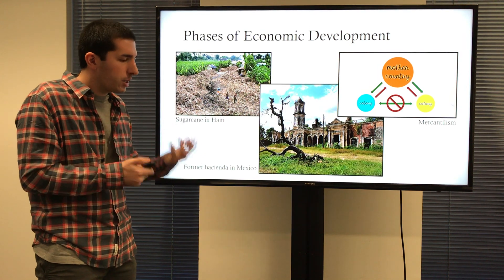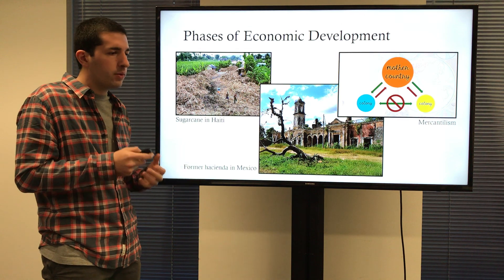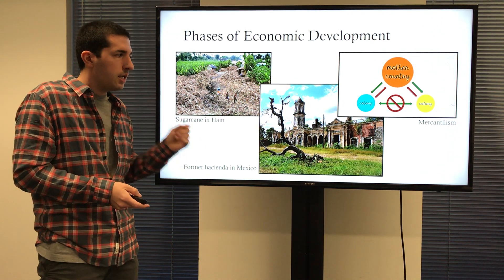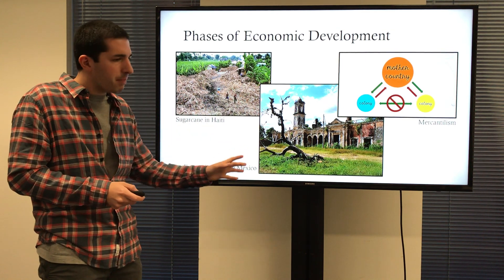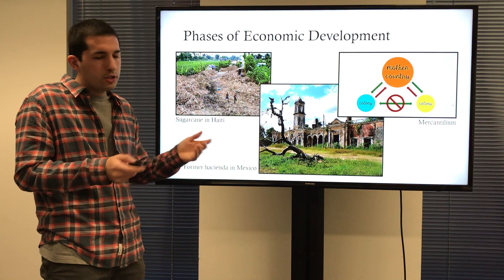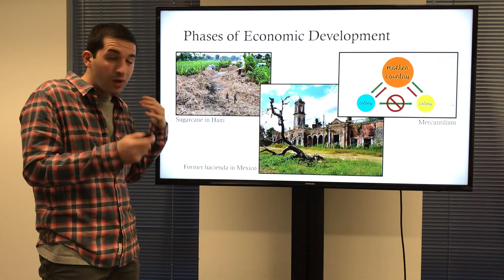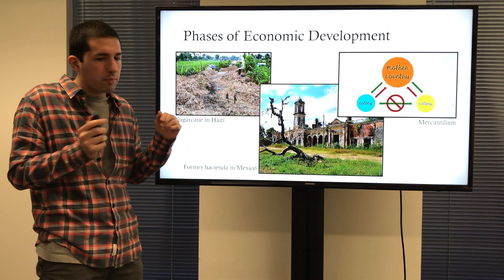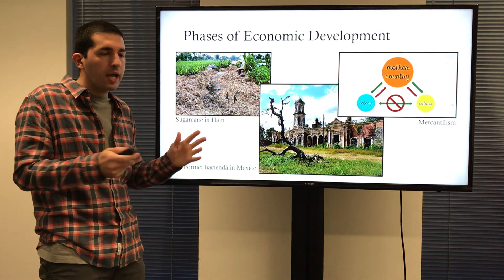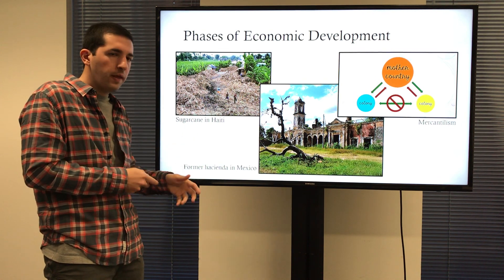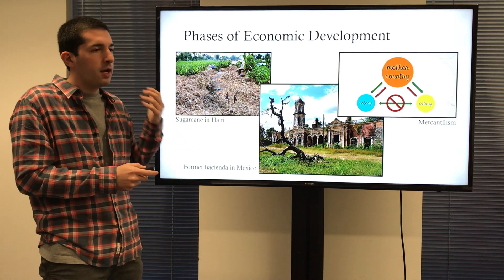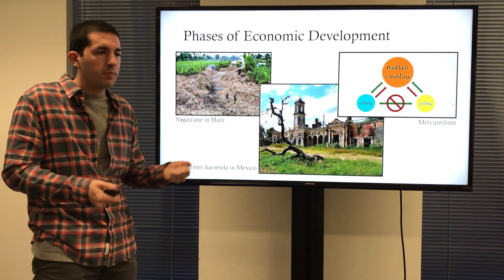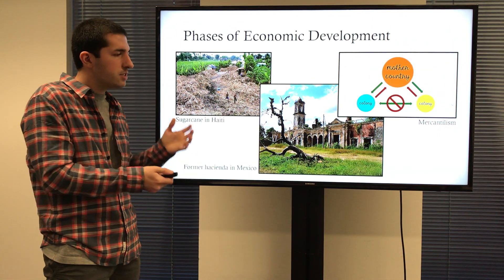From that extractive phase — that early economic phase — when we think of extractive, we're harvesting raw materials from the earth, the idea of an agrarian society and agriculture. These areas were established for the very purpose of agriculture, as seen with a former hacienda in Mexico. A hacienda would be a large-scale farming practice that would usually have a residence on hand, with someone living there running the operation. This differs from a plantation — large-scale agricultural production established in these areas for things like sugar cane plantations, like in Haiti. In early economic phases, we think of agrarian society, taking raw materials from the earth, where these areas remained really poor.